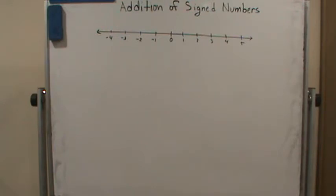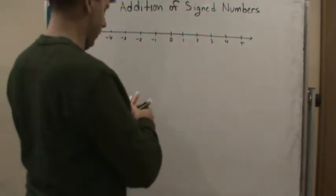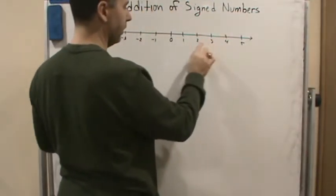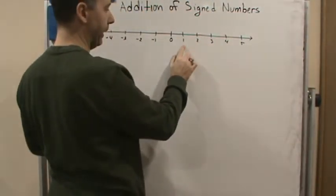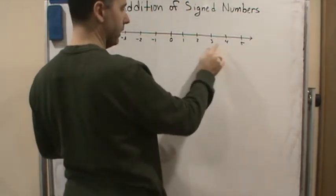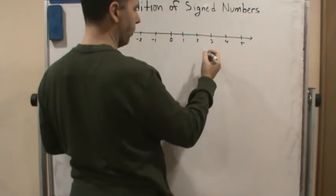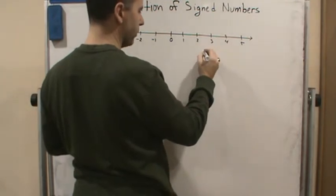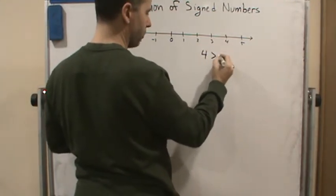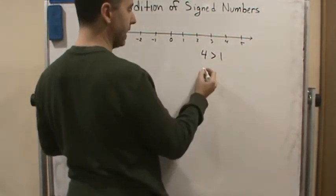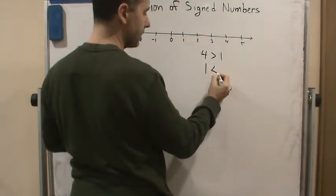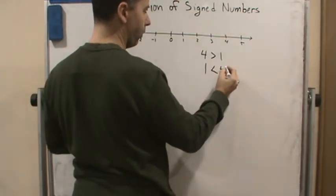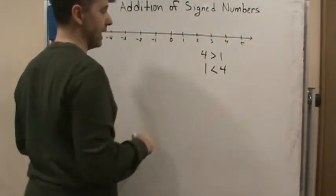So that means four is greater than one. Four is to the right of one, so four is greater than one. We would write four is greater than one, or we could say that one is less than four. These two are saying the same thing.